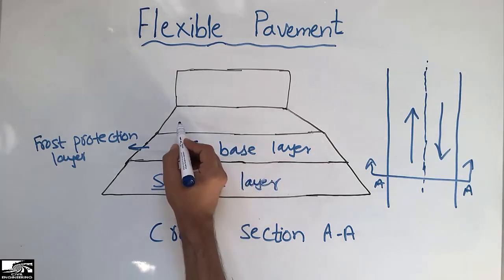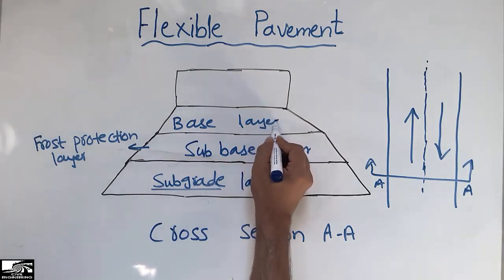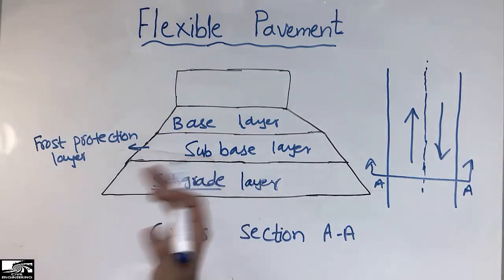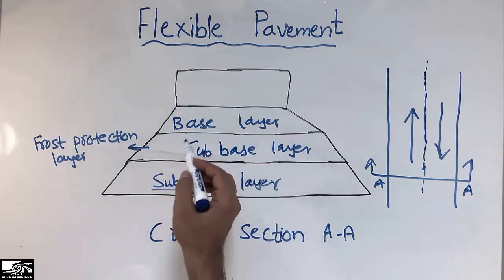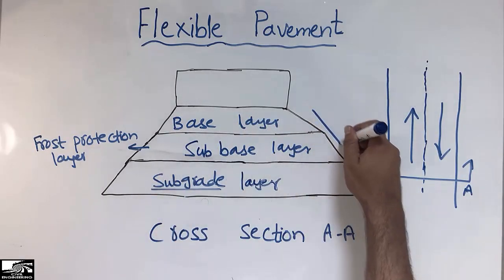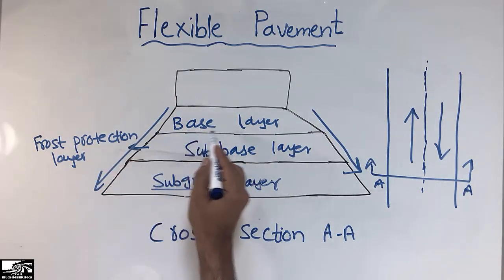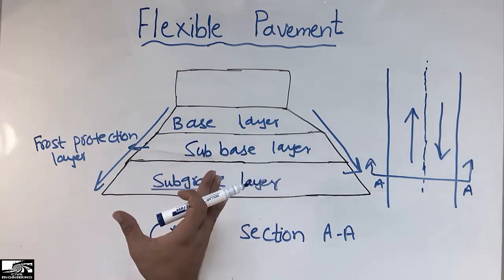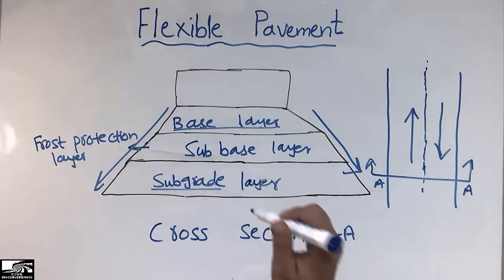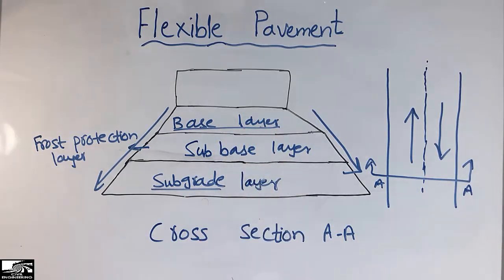On top of the subbase layer we have the base layer, which is made of granular material — it may be crushed rock, gravel, or recycled concrete. This layer helps to distribute the load from the base to the subbase and then to the subgrade. The base layer is mainly used for load distribution and drainage, and it should have good strength to transfer the load to the bottom layers.